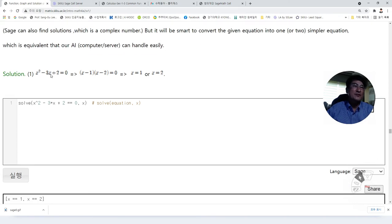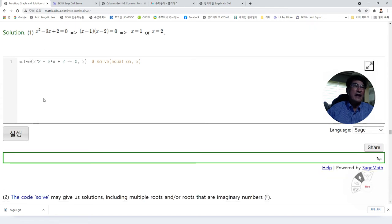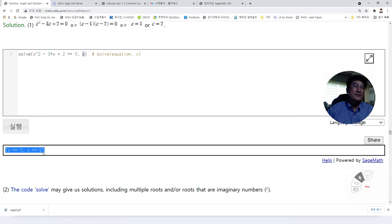For this one, we have solved this by integration, so we know x equals one or two are solutions. When x equals one and x equals two are all the solutions of this quadratic equation. The same answer can be found by this solve command. Then we have a solution one and two.